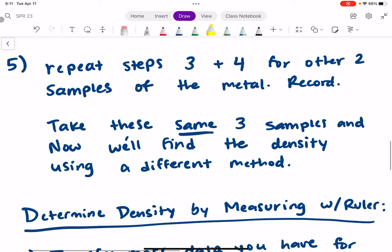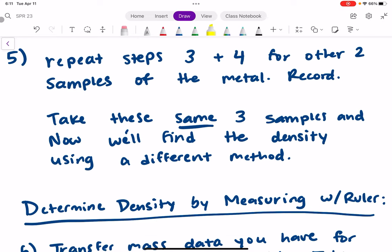You're going to take these same three samples. So if you started with aluminum, you're going to take all your aluminum samples and find the density using a different method.